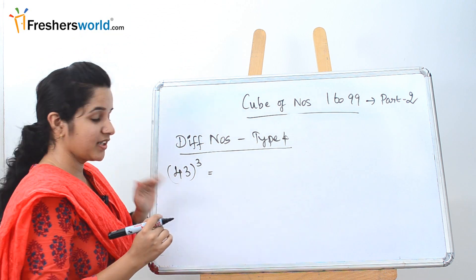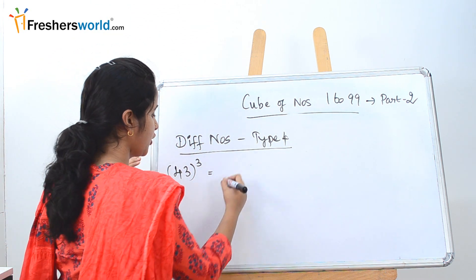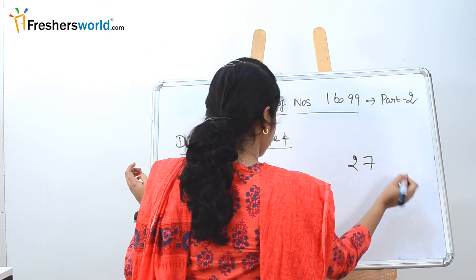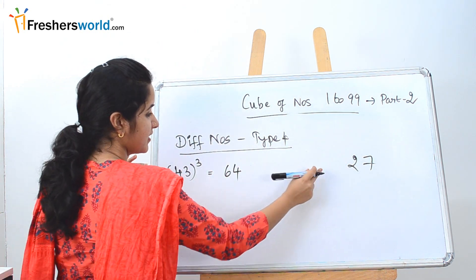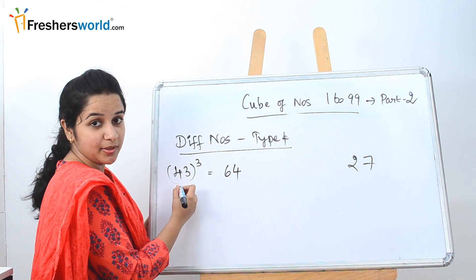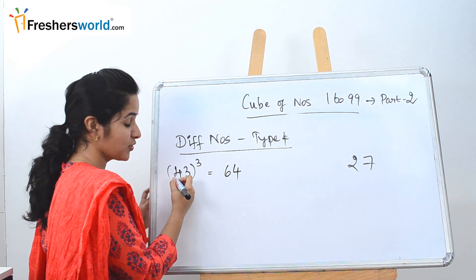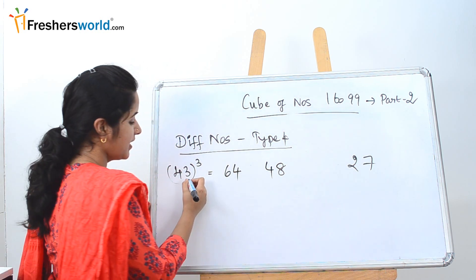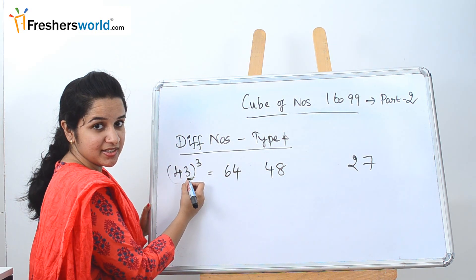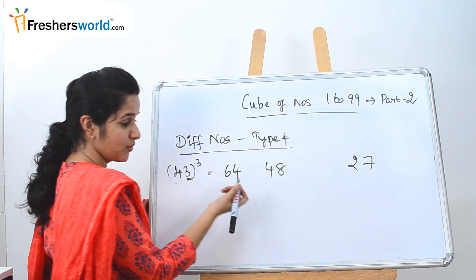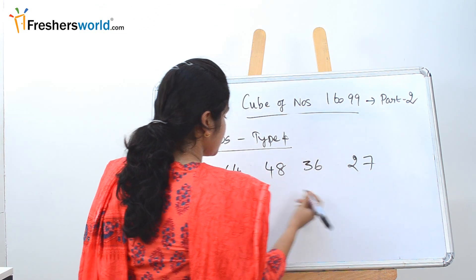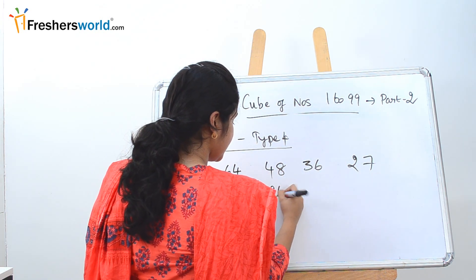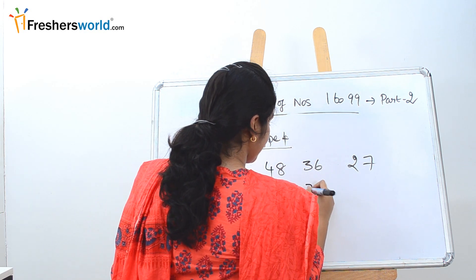Let's solve another example: 43 cube. 4 cube is 64 — write on the left. 3 cube is 27 — write on the right. For the second position: 4 squared into 3 is 16 times 3 which is 48. For the third position: 3 squared into 4 is 9 times 4 which is 36. Now multiply the middle two digits by 2: 48 times 2 is 96, and 36 times 2 is 72.